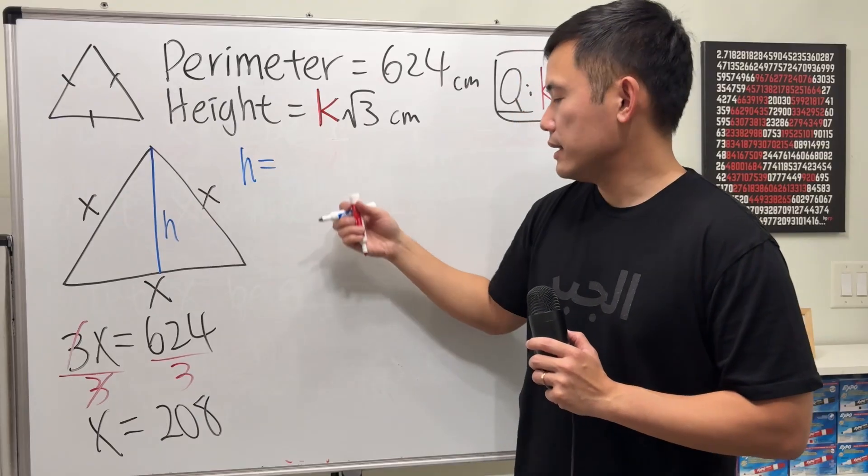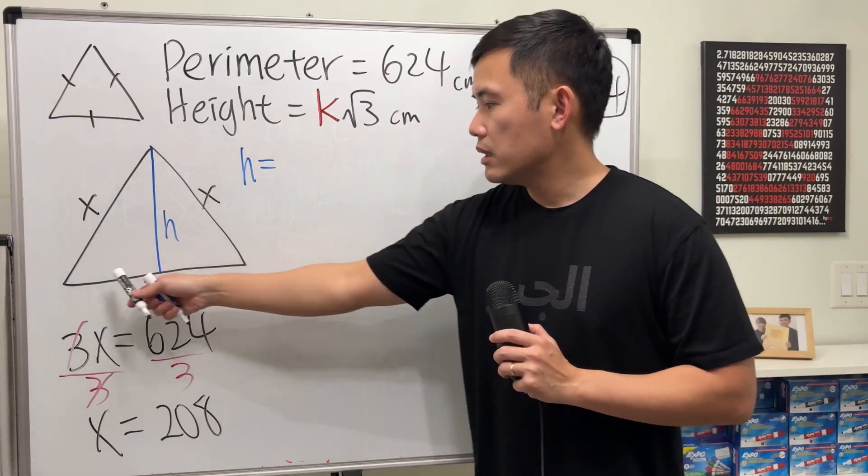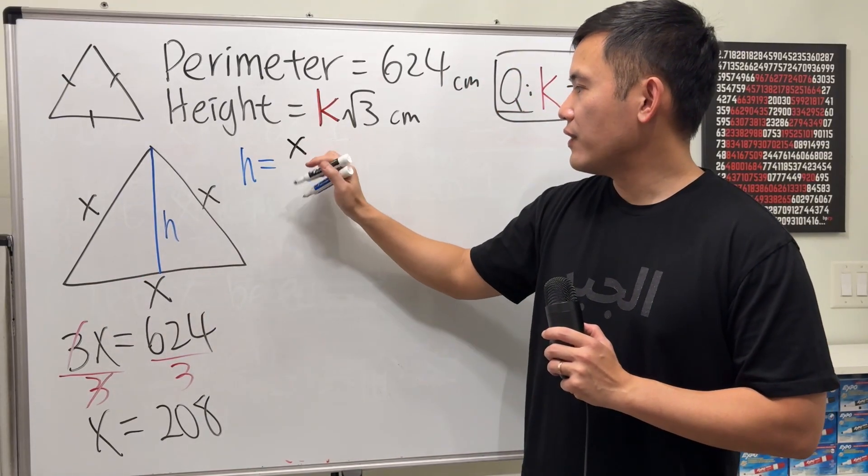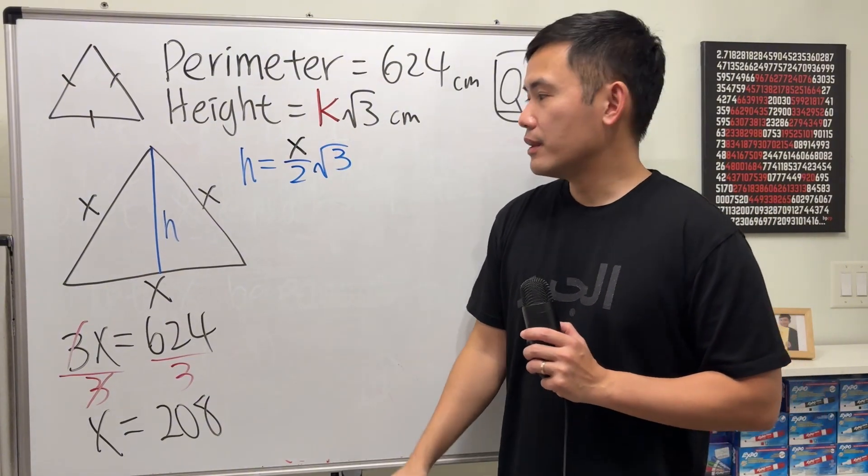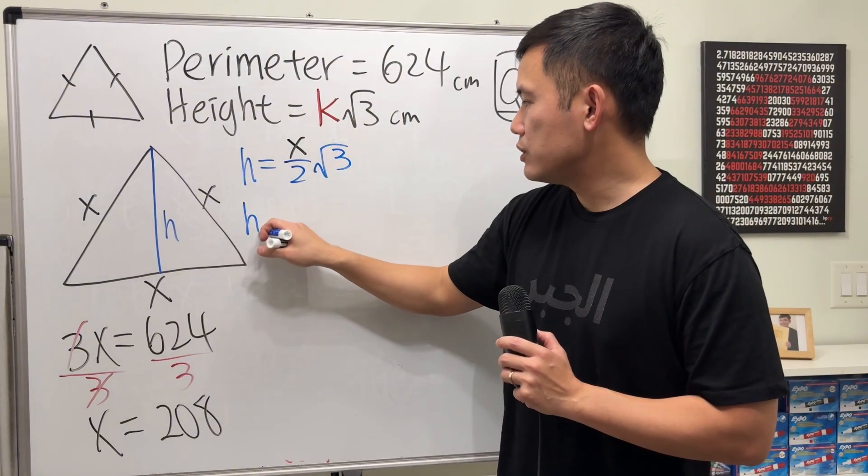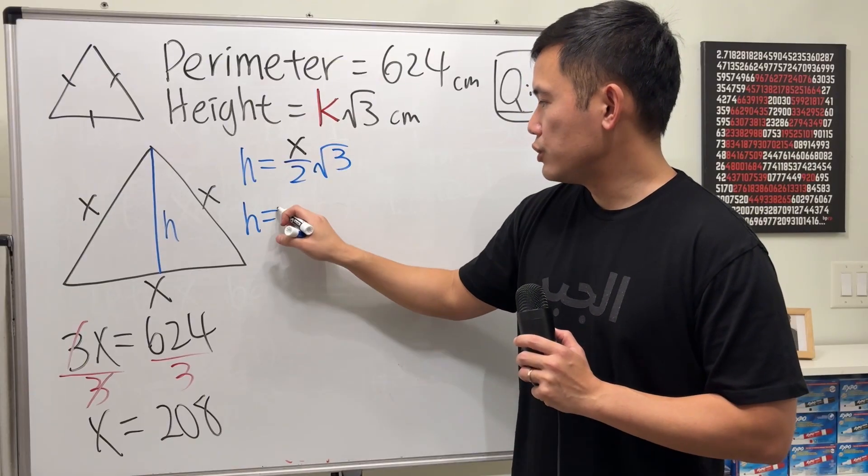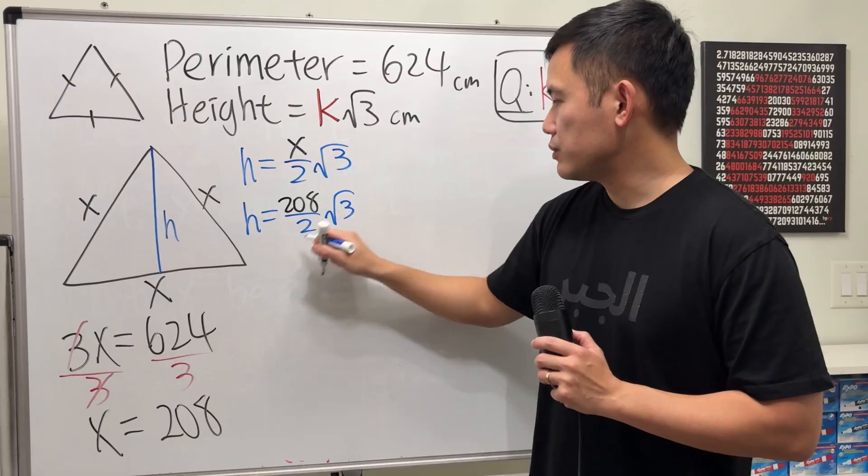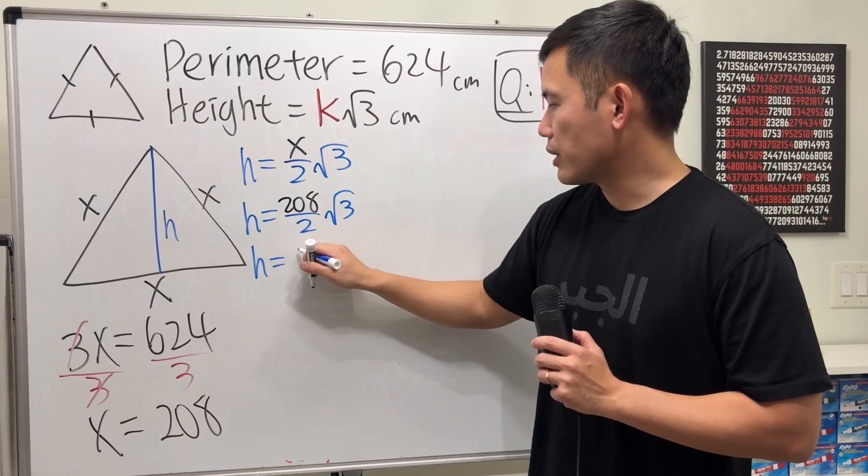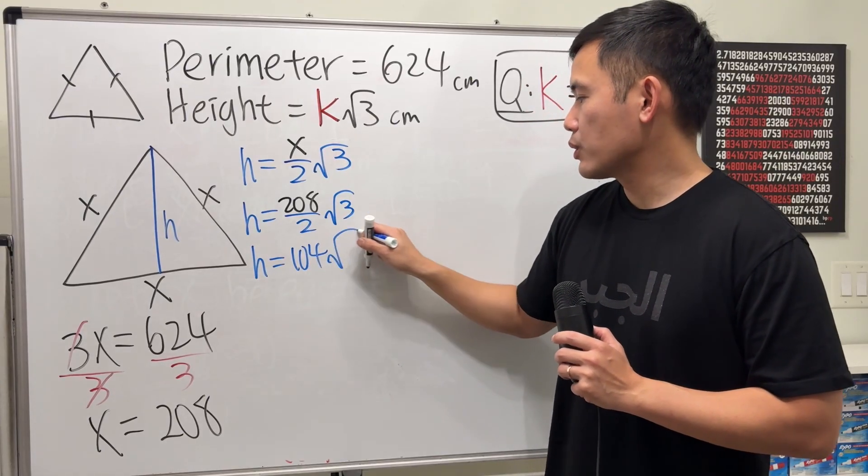The height is always going to be the side divided by 2 times square root of 3. So if we work this out, h is going to be 208 divided by 2 times square root of 3. So the height is, this right here is 104 times square root of 3.